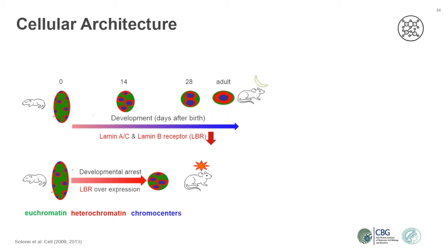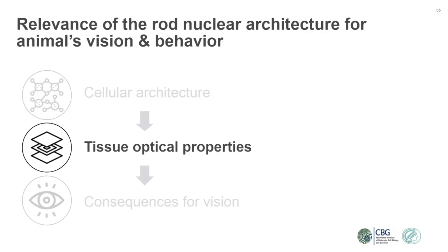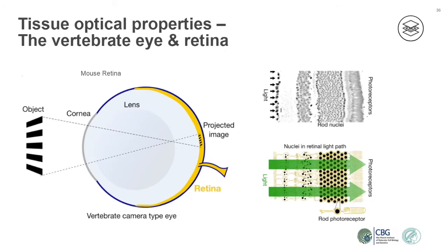Using such LBR mouse models, we were able to investigate the optical consequences of the two different nuclear architectures. To answer how different nuclear architectures influence the optical properties of the retina, we first need to look at why we need to study the optics of the retina at all.